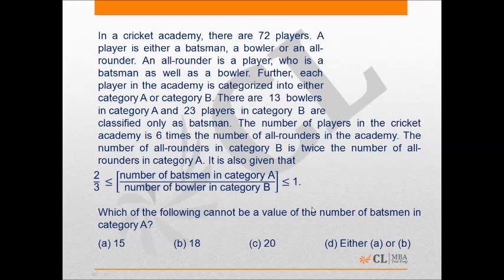An all-rounder is a player who is a batsman as well as a bowler. Further, these players are divided into category A and category B. There are 13 bowlers in category A, which includes some all-rounders, and 23 players in category B classified only as batsmen.